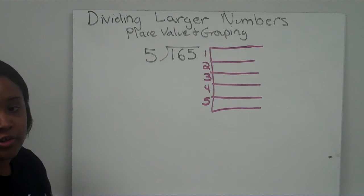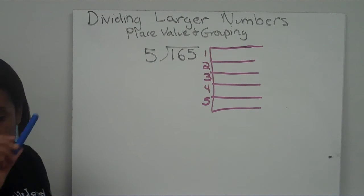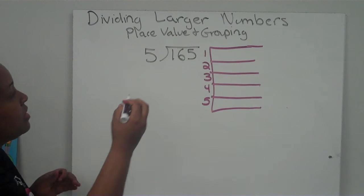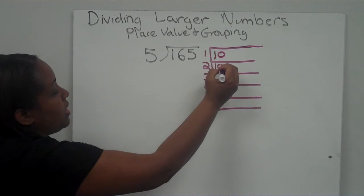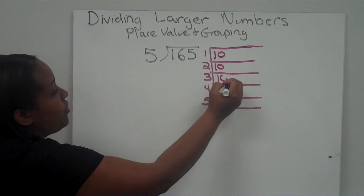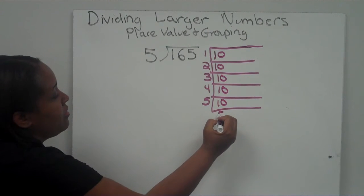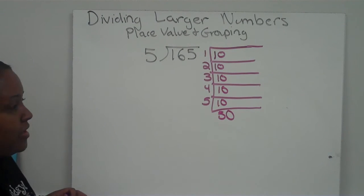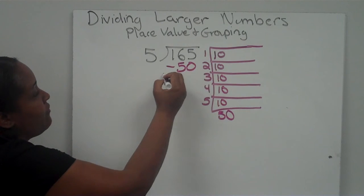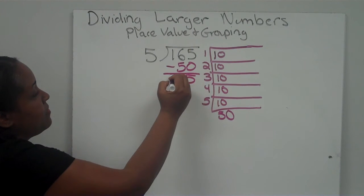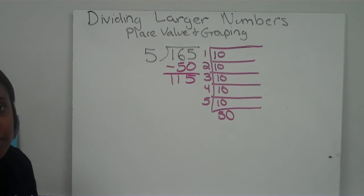So instead, I'm going to start with tens — my tens rod in my mind. I pass one ten to each of the five groups: 10, 20, 30, 40, 50. So far we've used 50. I'm going to subtract that from 165, and I have 115 left.